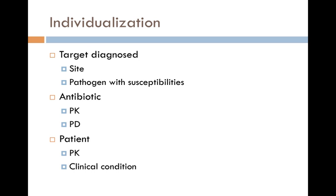So we've got three things involved here. We've got the pathogen and where it is — if it's a pneumonia, it's in the lung, whatever the pathogen is. Then we've got the antibiotic, the kinetics and the dynamics of the antibiotic. And then we've got the patient who has the clinical condition and particular pharmacokinetics that drive how that patient will utilize the drug. So three parts: the patient, the drug, and the bug and where it is.